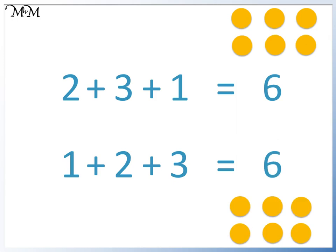It does not matter which order we add these numbers. We have 2, 3 and 1, or 1, 2 and 3. They are the same numbers, just in a different order. The sums both equal 6.